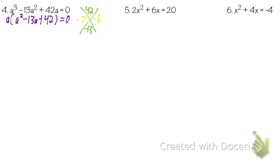We can use our shortcut here because there's a 1 in front of the a squared. So I keep the A out in front. The first parenthesis is (a minus 7), and the other is (a minus 6). It doesn't matter which comes first or second, as long as one parenthesis is one of them and the other parenthesis is the other.